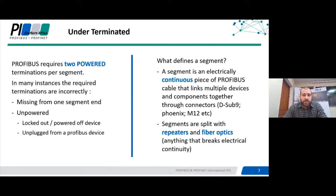This results in reflections, or alternatively the terminations are unpowered. A terminating resistive circuit requires power to create an idle voltage on the bus and protect it from interference and impedance related faults. The power for this termination circuit often comes from the device the Profibus connector is connected to. If this device is locked out, powered off, or the terminating plug is disconnected and just left in the panel, then the idle voltage — which requires at least one volt — will not be maintained, and you will suffer from interference related issues.